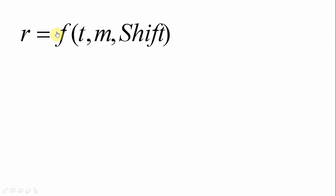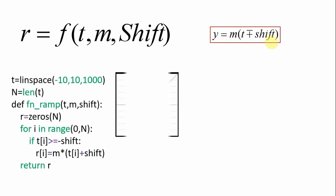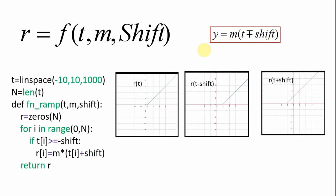Our ramp signal is a general function of three parameters: the time t, slope m, and the shift. This is the ramp signal which is 0 for t less than 0 and it is increasing linearly for t greater than 0.